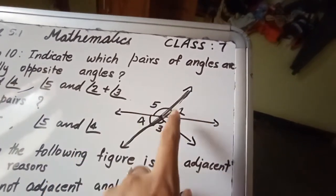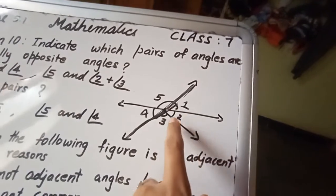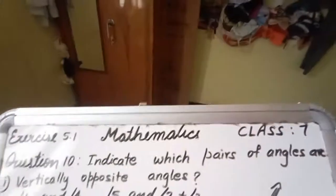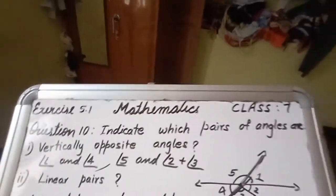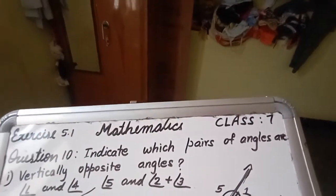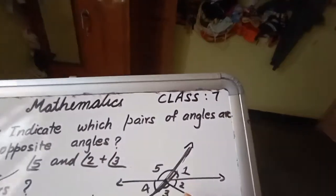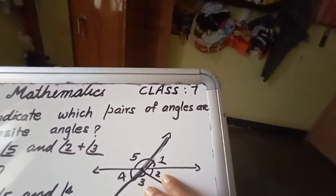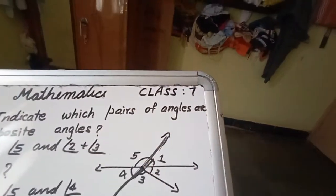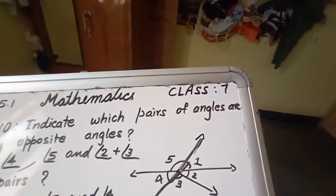5 vertically opposite, there are 2. So you can write 2 plus 3. So we can write the answer. 1 and 4 is vertically opposite. 5 and 2 plus 3, because these two if we put it together, then only 5 vertically opposite will get.